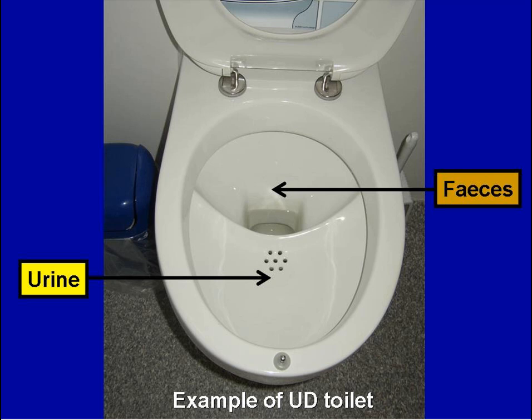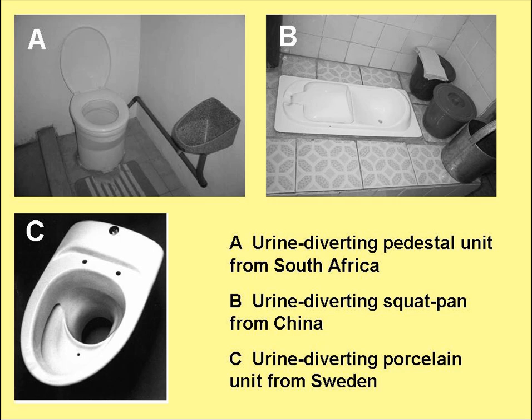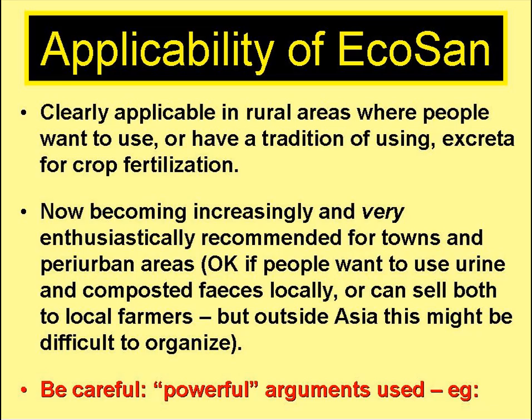This slide shows a urine-diverting pedestal seat toilet developed in Germany. Here we have three urine-diverting toilets: one from South Africa (top left), similar to the ones used in the alternating twin-vault VIP latrines in eThekwini; top right is the Chinese ceramic squat pan; and bottom left is a ceramic unit from Sweden. Ecosan is clearly applicable in rural areas where people want to use, or have a long tradition of using, human excreta for crop fertilisation, for example parts of China and Vietnam. Ecosan is now being very enthusiastically recommended for towns and peri-urban areas, but it's not always clear that the local people want to separate and use the urine, or indeed use composted faeces.